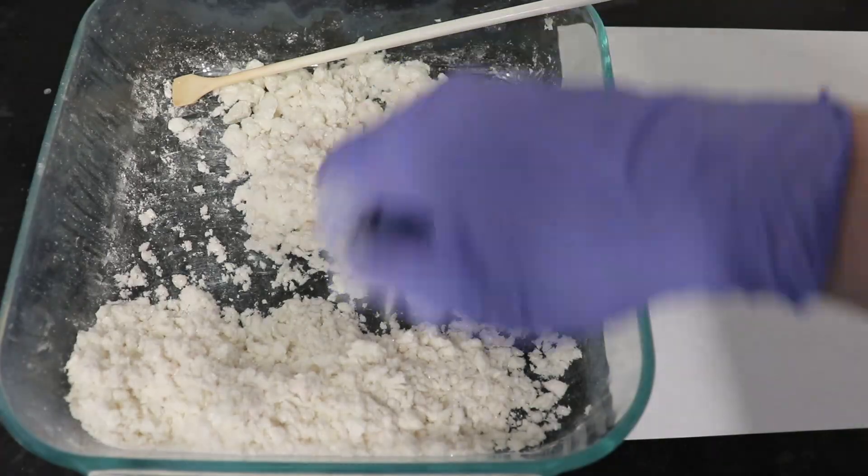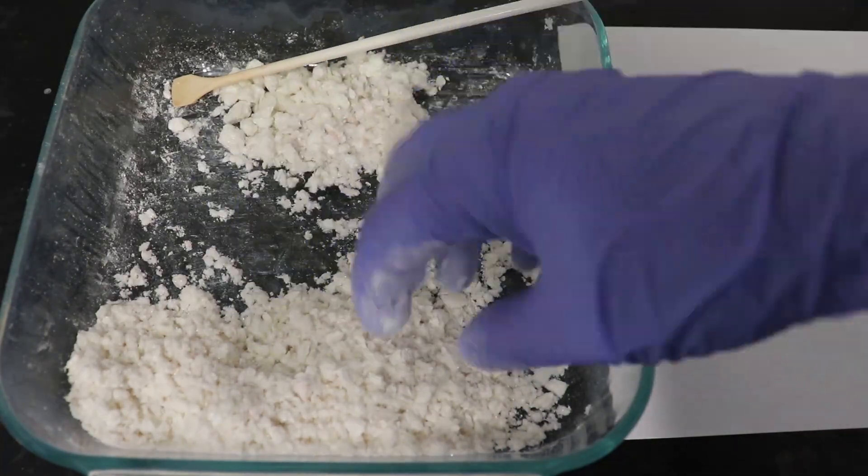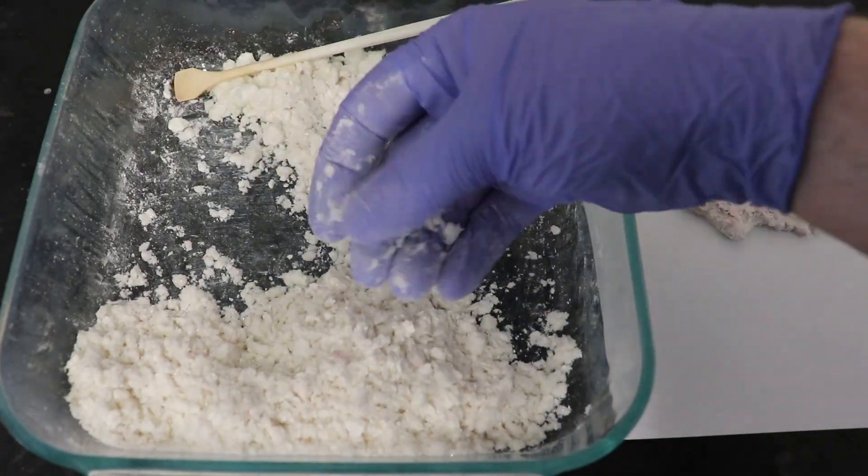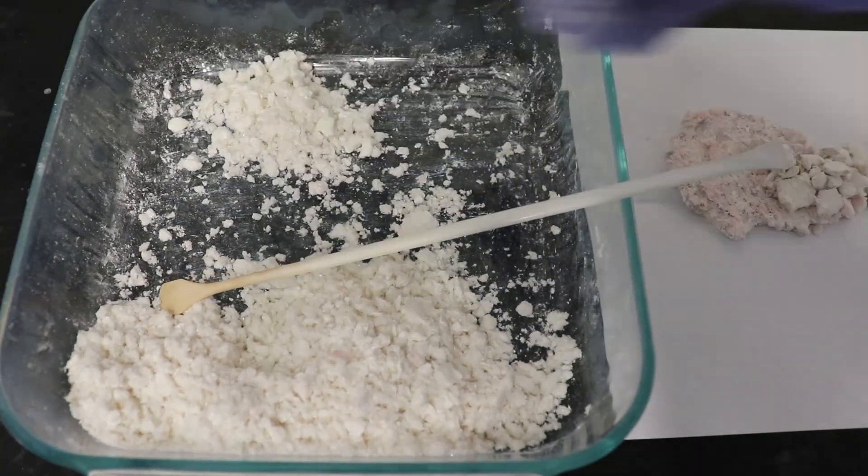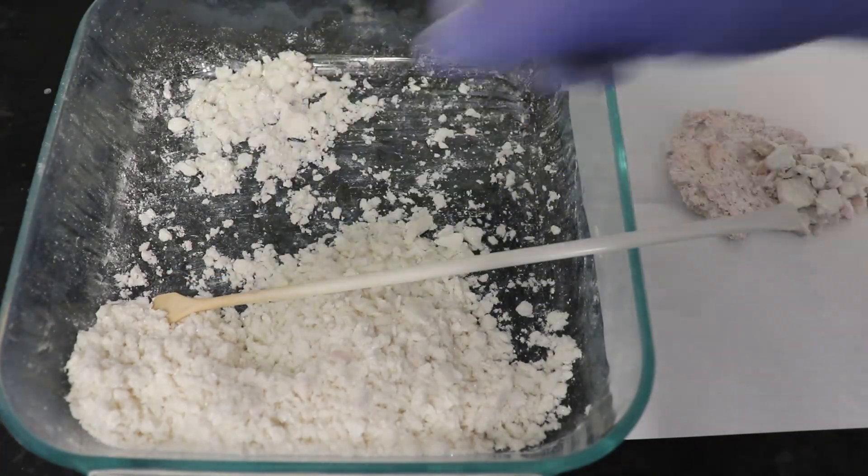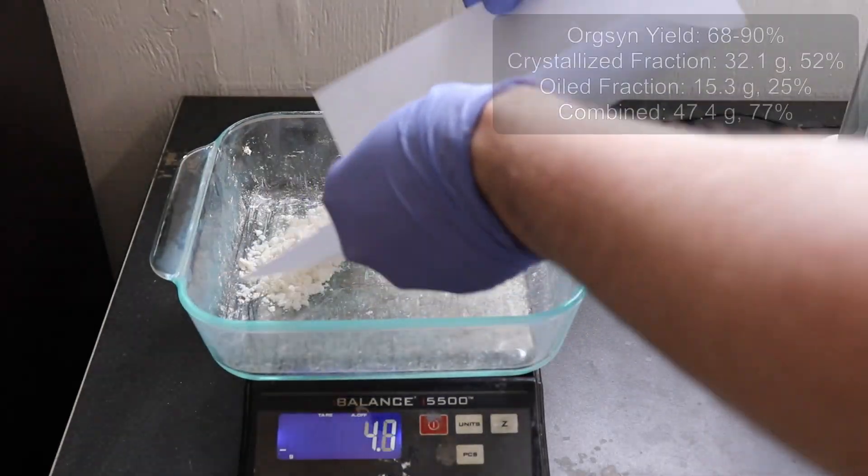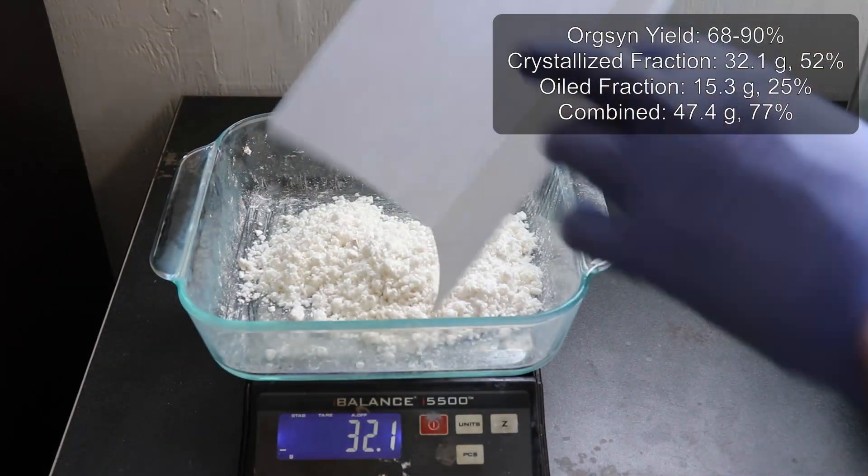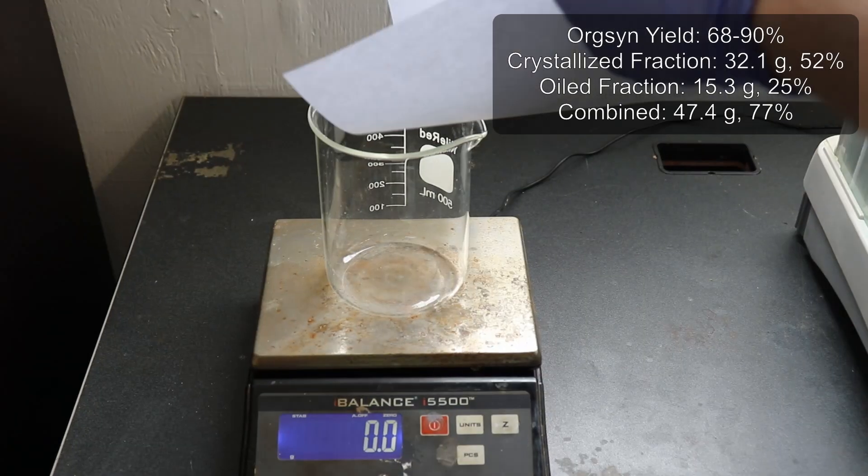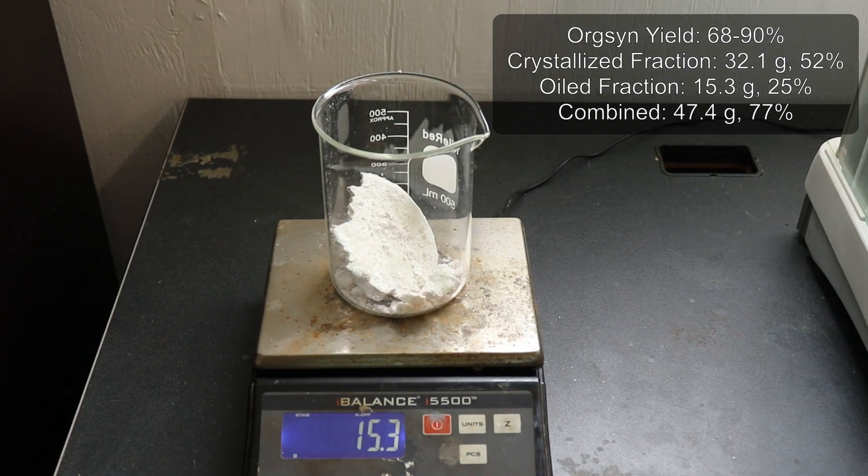I manually parsed through my product to separate what had oiled out from what crystallized, by feeling for hard lumps (assumed to be oiled material), while the crystallized material was soft. I recovered 32.1 grams of crystalline product and another 15.3 grams of oiled material.